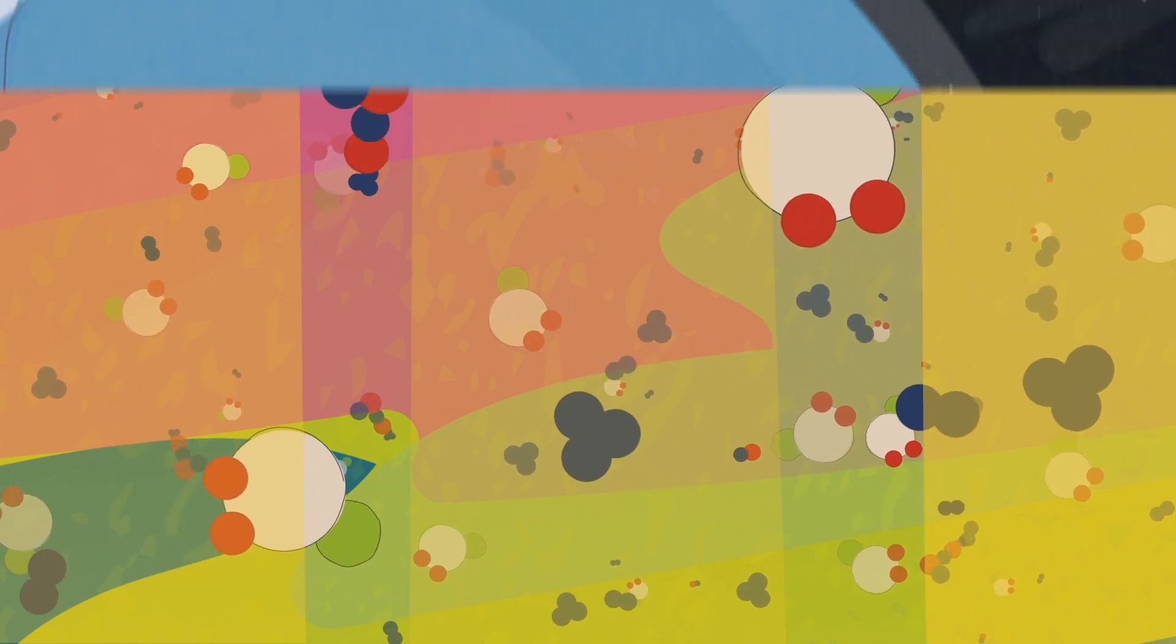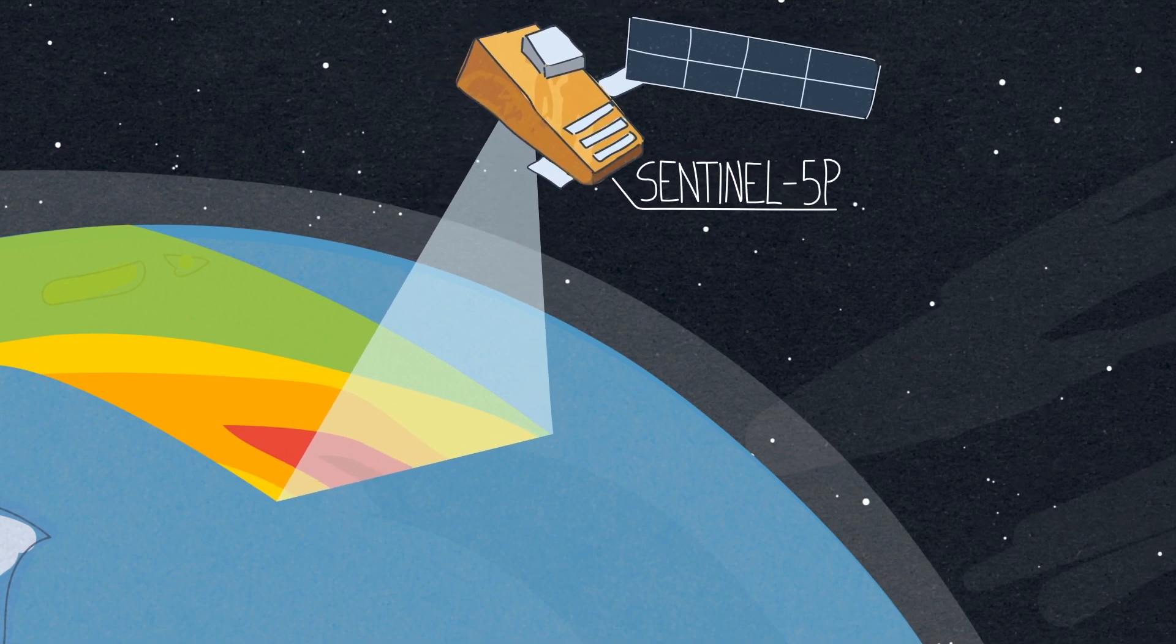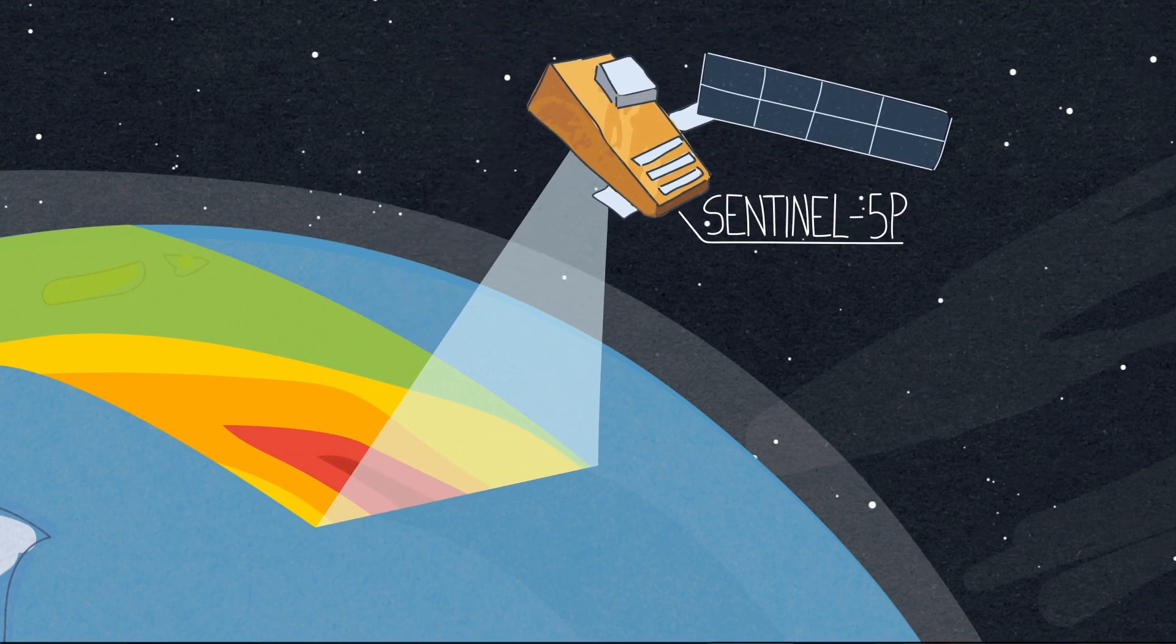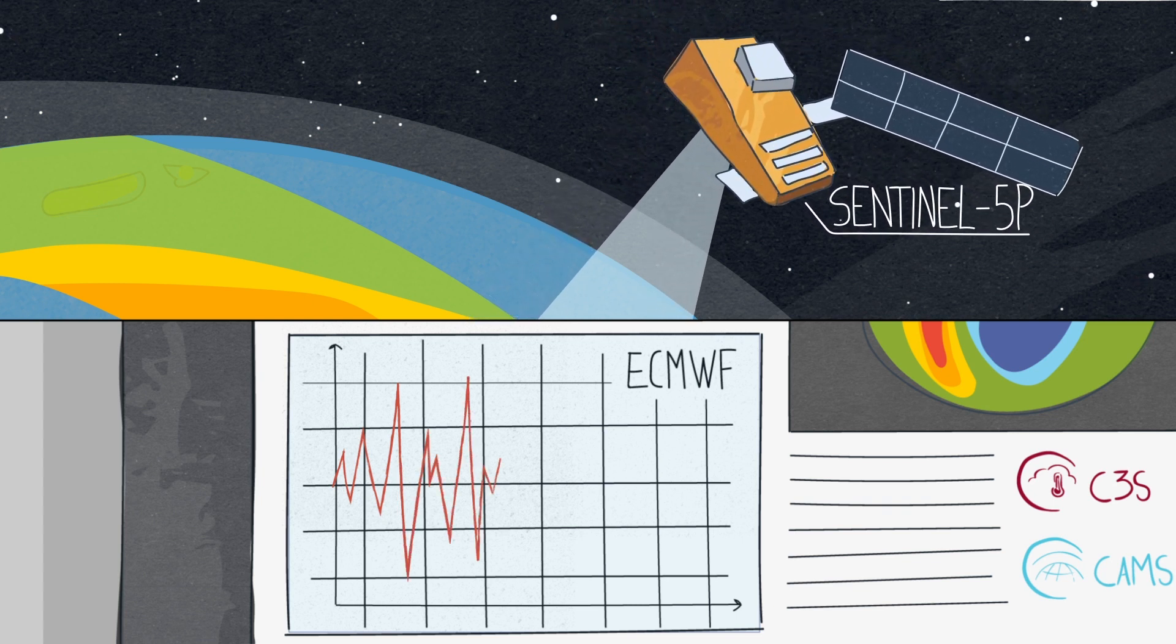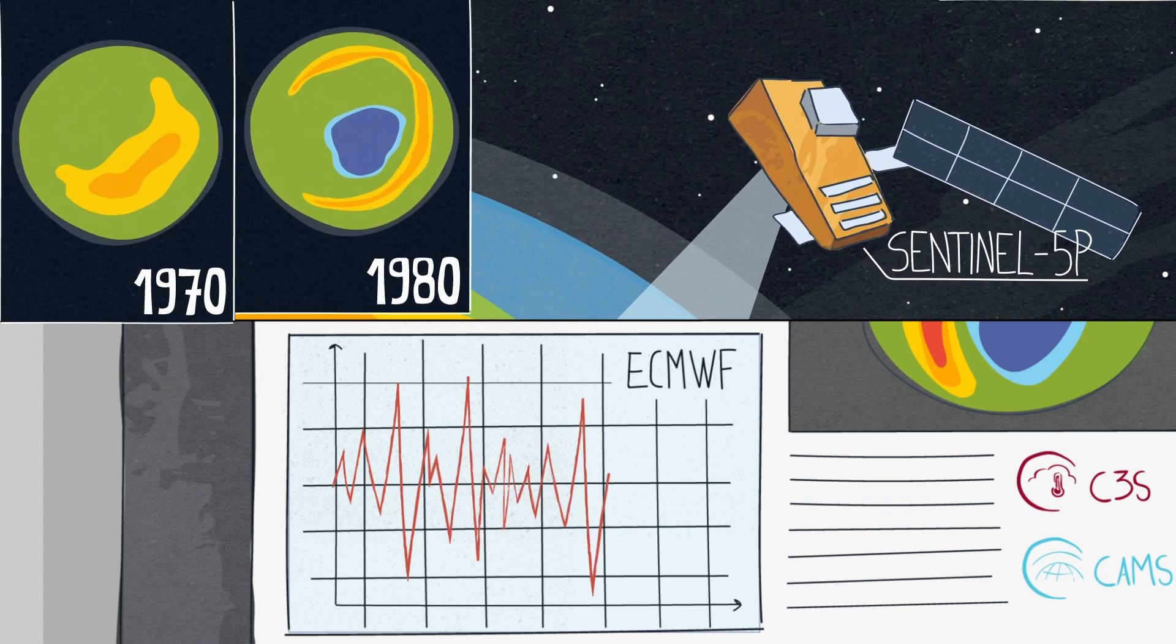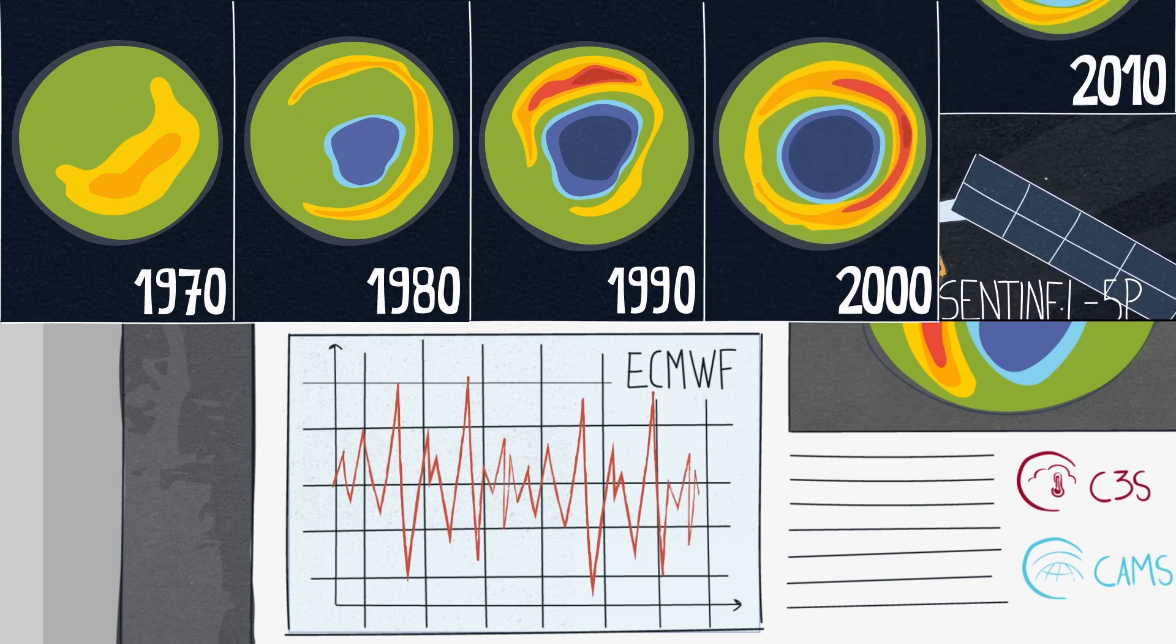The European Union's Copernicus programme monitors stratospheric ozone using satellite observations and modelling, similar to weather forecasting, to give us a clear idea of how the ozone layer is healing over time.